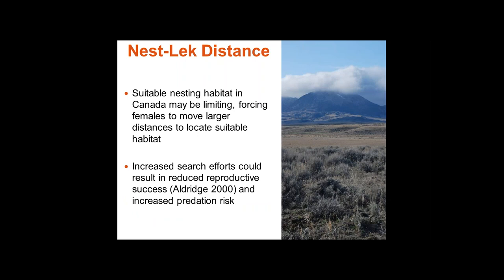Suitable nesting habitat in Canada may be limiting, forcing females to move larger distances to locate suitable habitat. With silver sagebrush providing less cover than big sagebrush, and birds unfamiliar with a fragmented landscape, the increased search effort for nesting habitat could result in reduced reproductive success and higher predation risk.